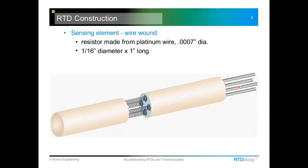The external lead wires are also platinum. Some sensors are made with pure platinum wires; others use a platinum-rhodium alloy to make them a little stronger. That junction can also be a location for a shift in resistance or an open circuit.